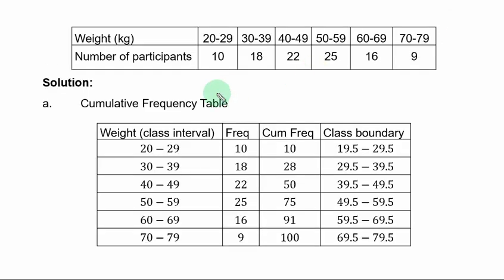Solution. From the given table, you construct the cumulative frequency table. We can take the weight as class interval. This is frequency column as given in the question. Then you add cumulative frequency column. The first cumulative frequency is the first frequency.